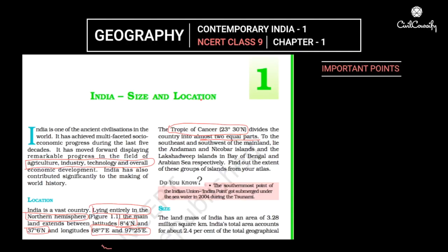Chapter 1: Geography, Contemporary India Part 1, NCERT Class 9. This is the introduction which says that India has progressed in the fields of agriculture, industry, technology, etc.